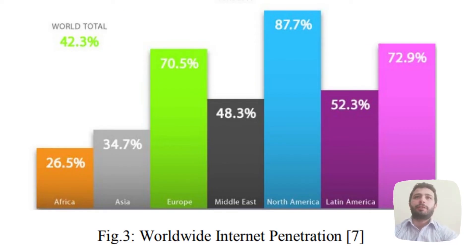To reflect the worldwide internet penetration, the paper makes use of a bar chart where each column has a legend and is represented by a different color. Additionally, the world total is represented as a single number without a visual equivalent. All this becomes very distracting for the user.